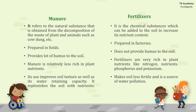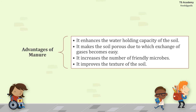Manure is relatively less rich in plant nutrients. It improves the texture of the soil and increases the water-retaining capacity. It replenishes the soil with nutrients. Fertilizers, on the other hand, can make the soil less fertile and are a source of water pollution. The advantages of manure: it enhances water holding capacity, makes soil porous so gas exchange becomes easier, increases the number of friendly microbes to help replenish the soil naturally, and further improves the texture of the soil.